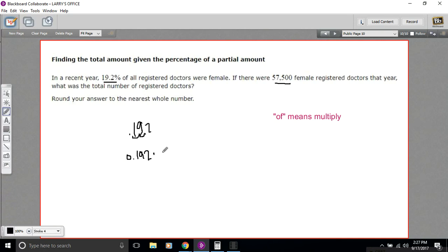And then what we're looking for is all of the number of registered doctors. And that's what the 0.192% is of. So I'm just going to put in a variable for that X that equals 57,500, the number of female doctors.